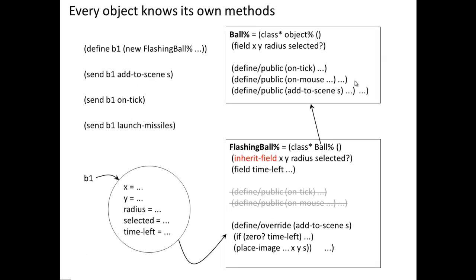If I create a new FlashingBall and send it an add-to-scene method, it says, oh okay, I'll use my local add-to-scene method.